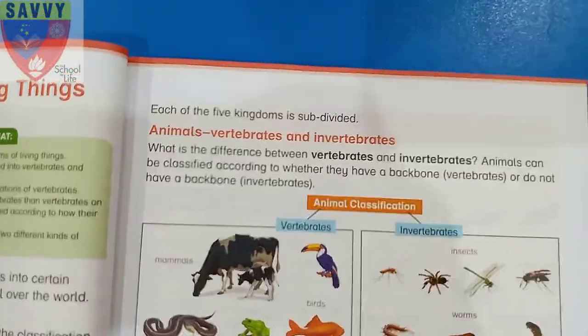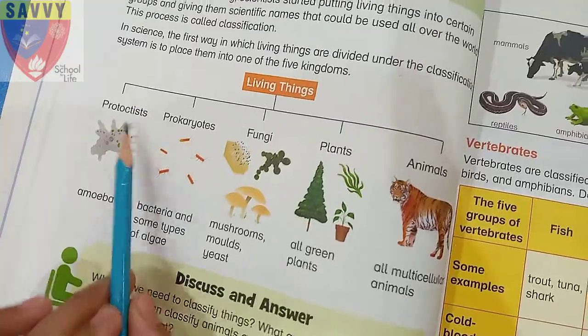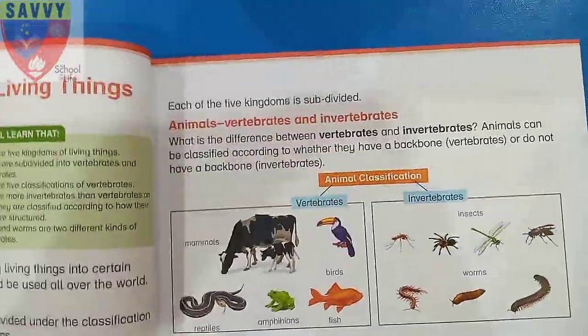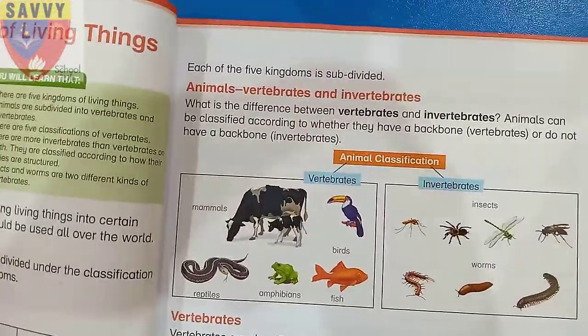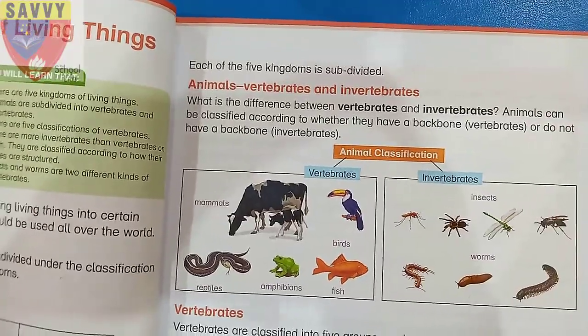Each of the five kingdoms — these are the five kingdoms, one, two, three, four, five — which they have classified. Next, each of the five kingdoms is subdivided.